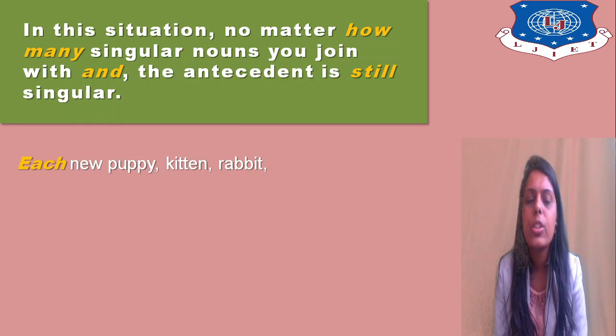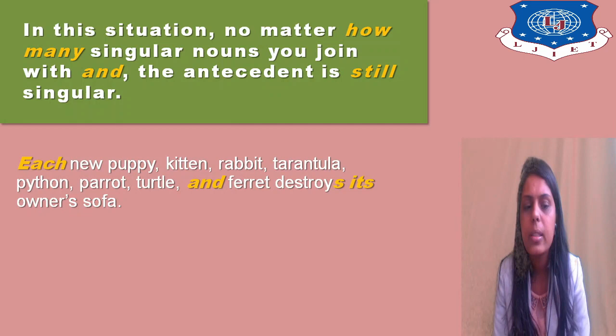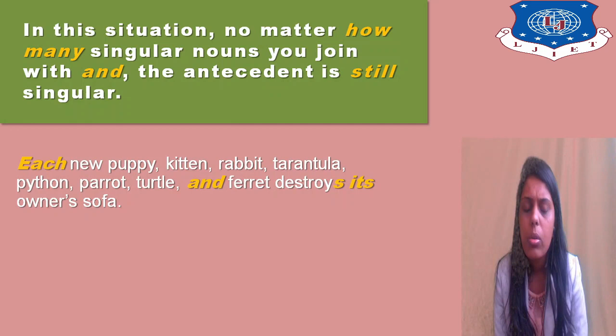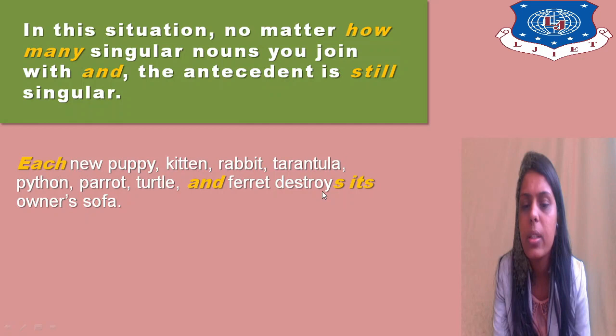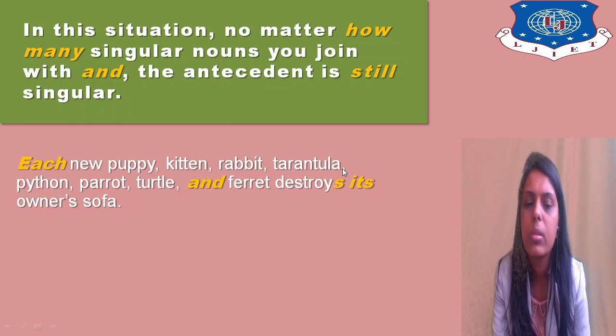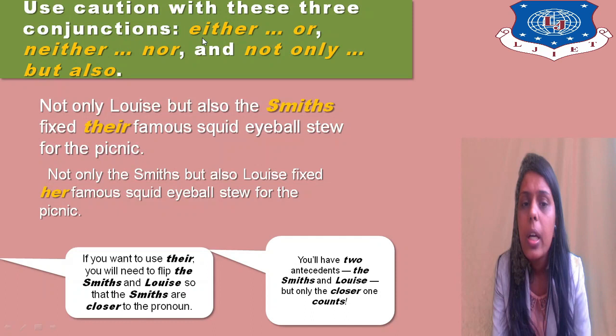In another situation, no matter how many singular nouns you join with 'and,' the antecedent is still singular. For example: 'Each new puppy, kitten, rabbit, tarantula, python, parrot, turtle, and ferret destroys its owner's sofa.' No matter how many singular nouns are joined, the antecedent is always singular — we use 'its.' Now use caution with these conjunctions: either/or, neither/nor, and not only/but also.